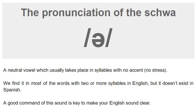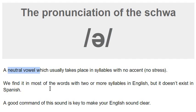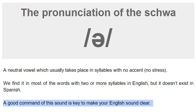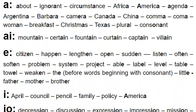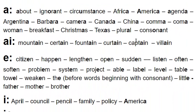Welcome to this presentation of the pronunciation of the sound schwa. The sound schwa is represented by this symbol here — it's like an upside-down E and it's pronounced 'uh'. It's a neutral vowel which usually takes place in syllables with no accent, no stress. We find it in most words with two or more syllables in English, but it doesn't exist in Spanish. This is important to remember. A good command of this sound is key to making your English sound clear.